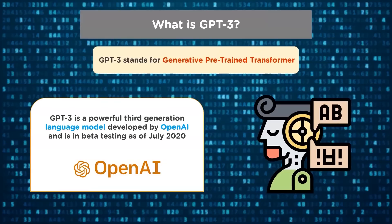GPT-3 is the latest example of a long line of pre-trained models like Google's BERT, Facebook's Roberta, and Microsoft's Turing NLG. Pre-trained models are large networks trained on massive datasets, usually without supervision. Soon after its release, the internet was flooded with text examples generated by GPT-3. OpenAI has been working on building language models for quite some time now, and every breakthrough makes the news. GPT-3 seems to be a turning point in the field of AI.